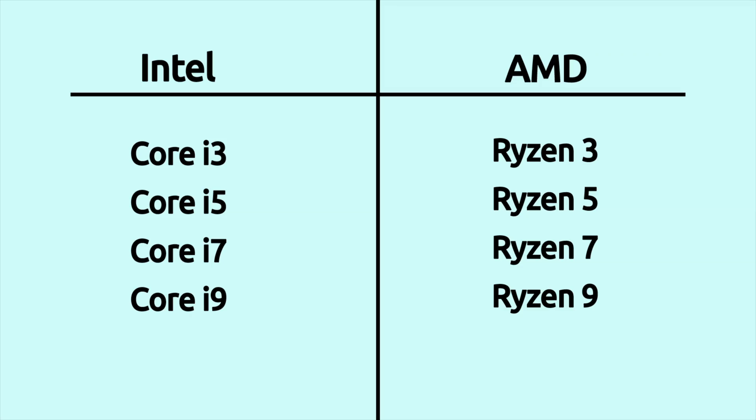On the Intel side the lowest is the i3; AMD has Ryzen 3. Intel has i5, AMD has Ryzen 5; Intel has i7, AMD has Ryzen 7; Intel has i9, AMD has Ryzen 9. For a basic user just surfing the web, writing emails, or playing basic games, the i3 is fine. For a bit more, step up to the i5 or Ryzen 5.